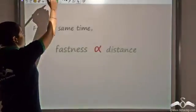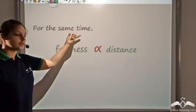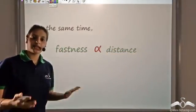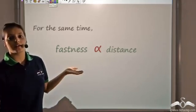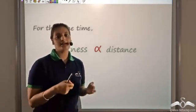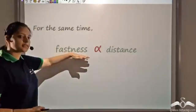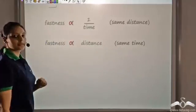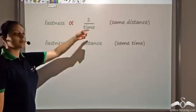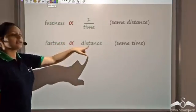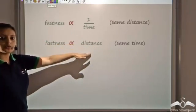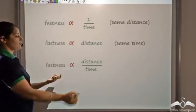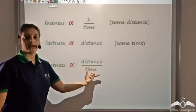So for the same time, fastness directly depends on distance covered. More the distance covered, the faster it is; less the distance covered, the less fast it is. Combining both findings: fastness inversely depends on time and directly depends on distance. Therefore, fastness depends on distance divided by time.